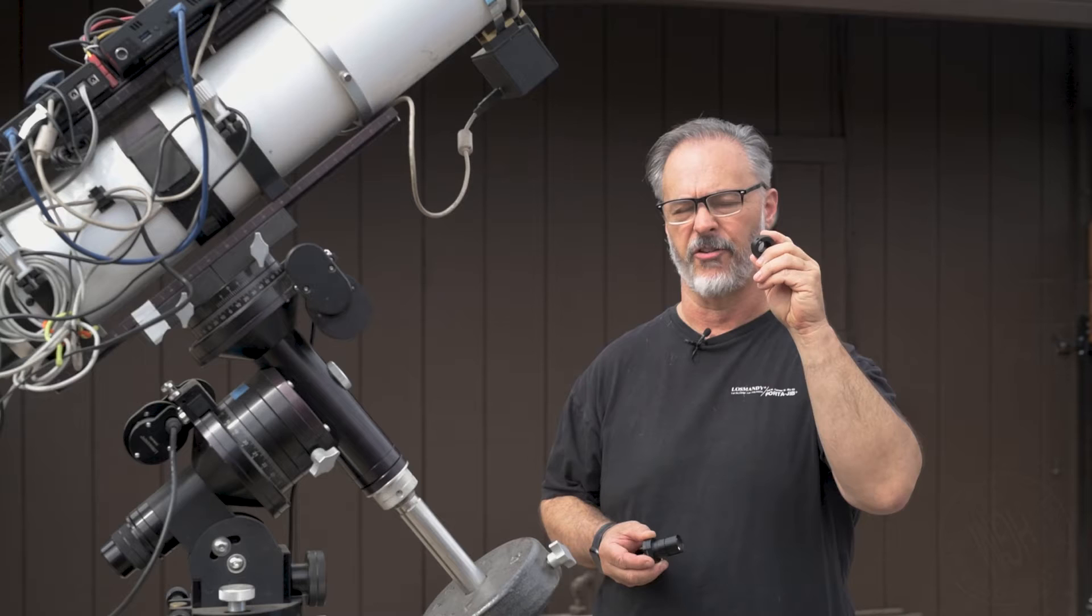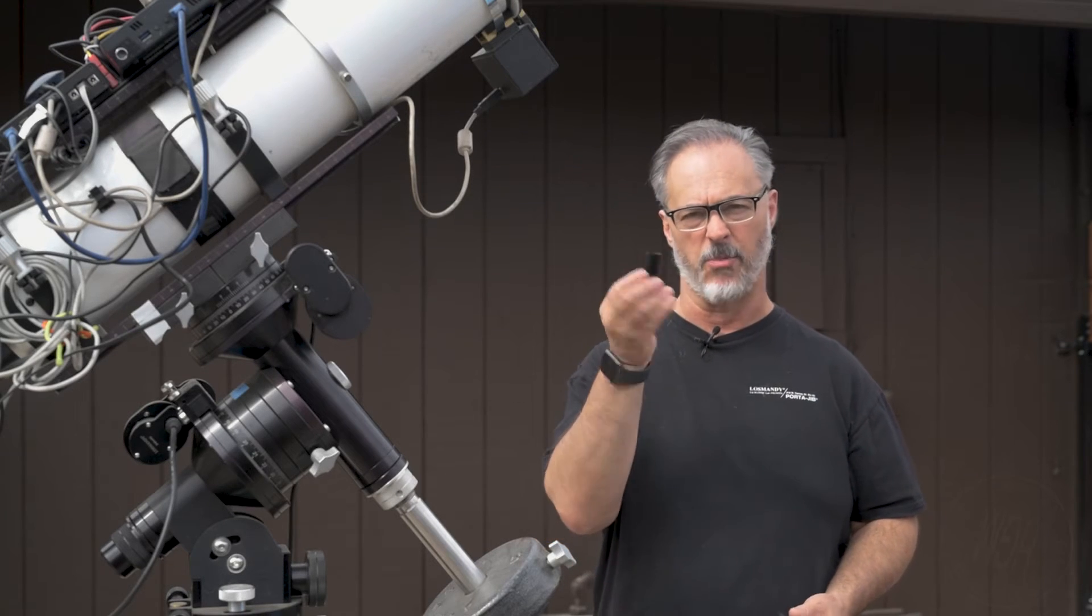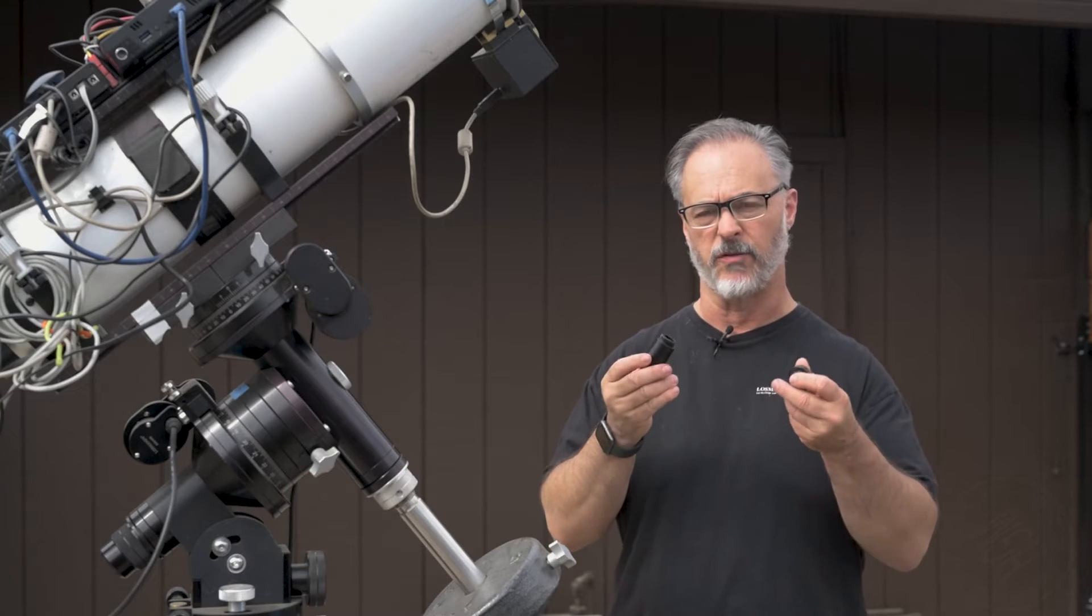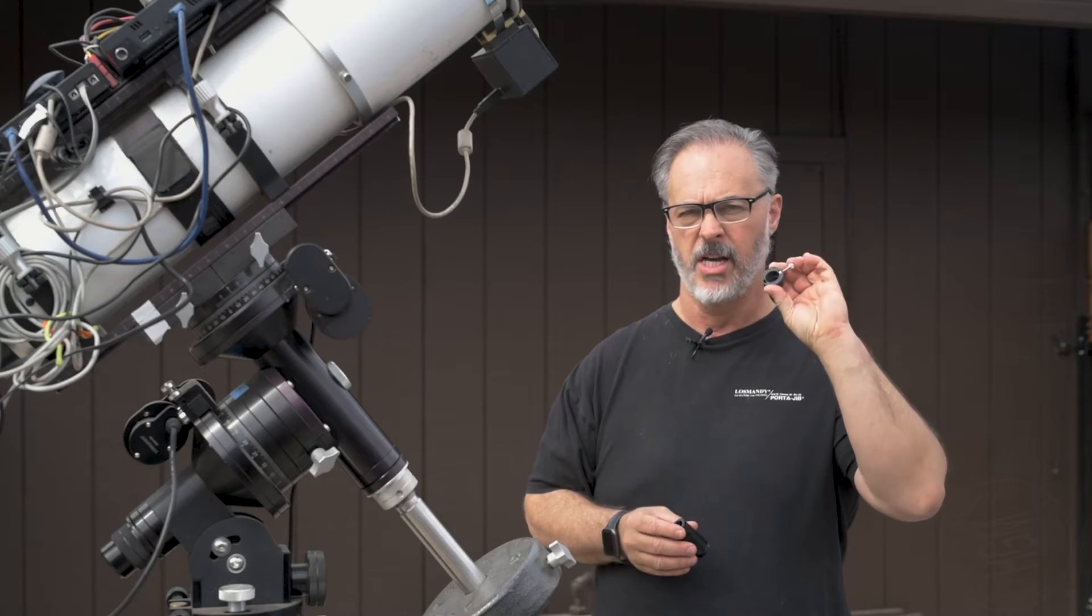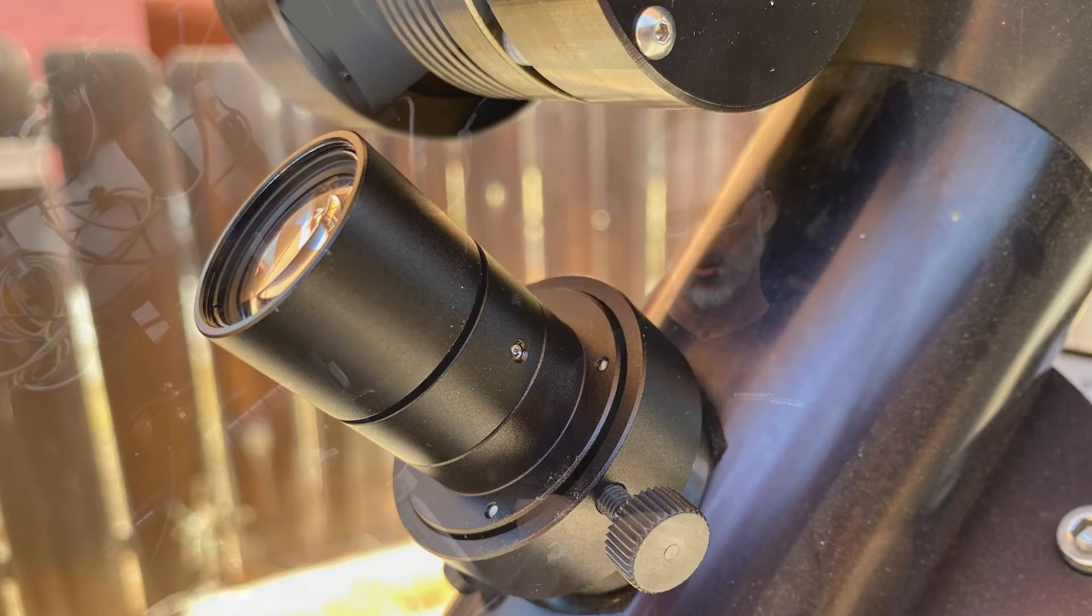But it's going to work basically the same way. So the things you'll need to do polar alignment using the iPolar camera is number one, of course, the iPolar camera itself. And then you're going to need one of the adapters for the Losmandy mount. This is the G11 mount adapter that plugs right into the cover of the deck port here.